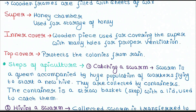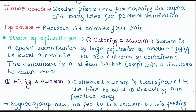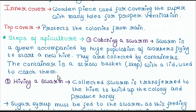Let's talk about the steps of Apiculture. First is catching a swarm. A swarm is basically a queen accompanied by a huge population of worker bees flying to start a new hive. They are collected using containers — specifically a straw basket also known as a skep, which has a lid and is used to catch them.